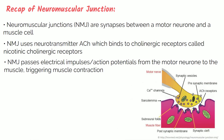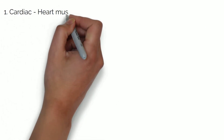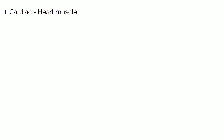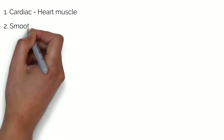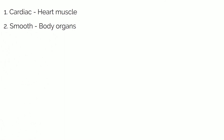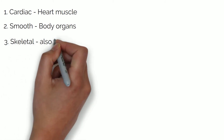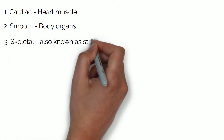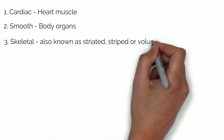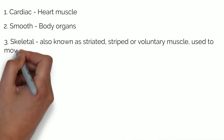There are three types of muscle in our bodies: cardiac, which is the heart muscle; smooth muscle, which our body organs are formed from; and skeletal, also known as striated, striped or voluntary muscle, and these are used to move the bones.